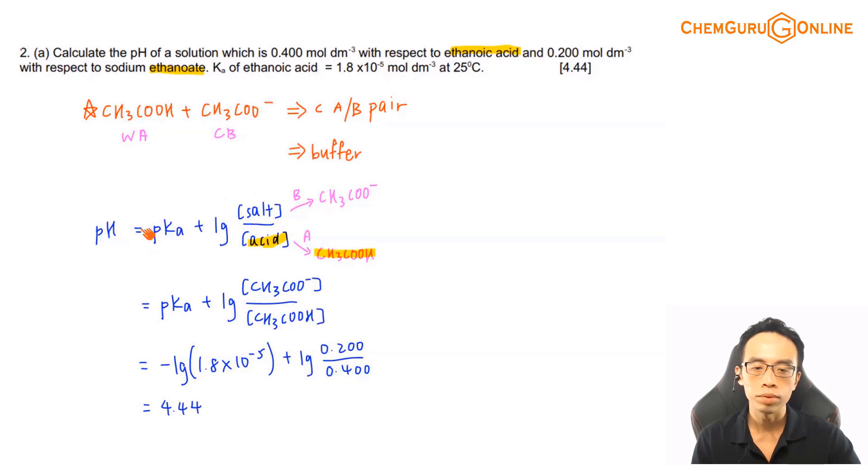I just use pH equals to pKa plus log salt over acid. Acid very nicely will be ethanoic acid. The conjugate base is CH₃COO⁻ which also happens to be an ionic compound, this is a salt. So for simple buffering systems like this, usually no problem, but don't have this impression thinking that all the buffers will look as simple as this.